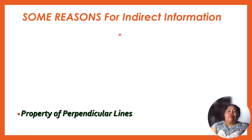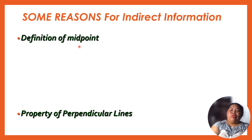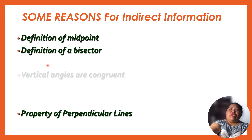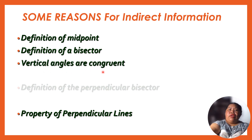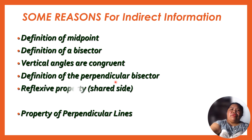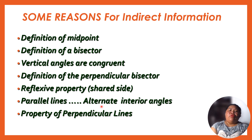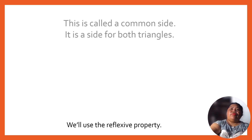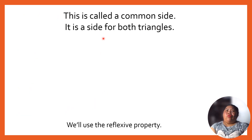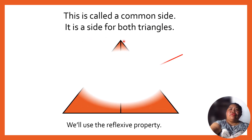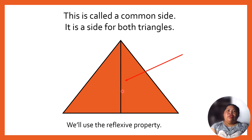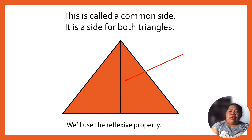Some reasons for indirect information: we have the definition of midpoint, the definition of bisector, vertical angles are congruent, definition of perpendicular bisector, reflexive property or shared side, and of course parallel lines — alternate interior angles and the property of perpendicular lines. This is called the common side, and it is the side shared by both triangles, so we'll use the reflexive property.